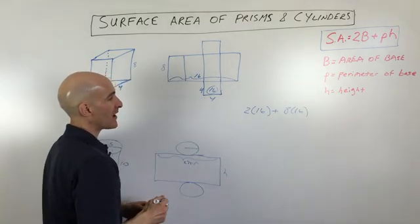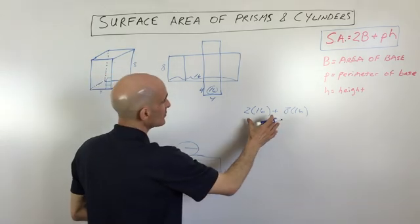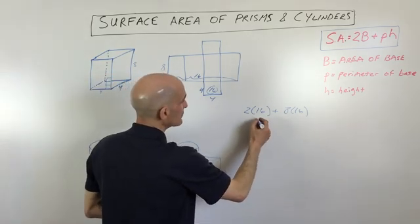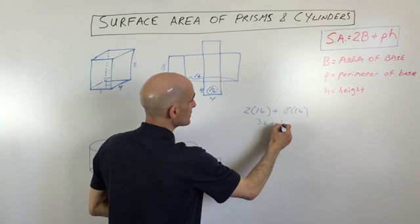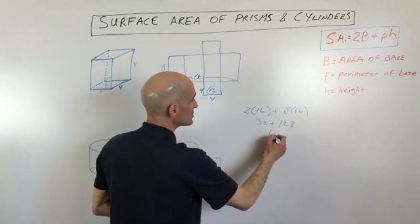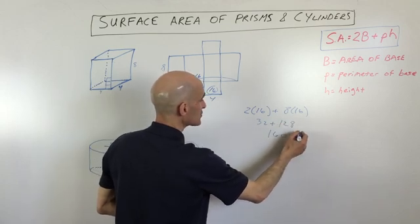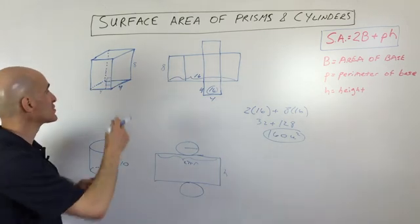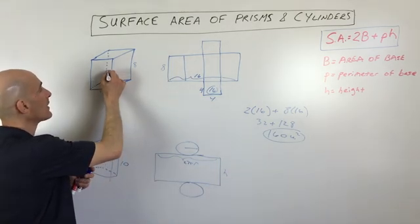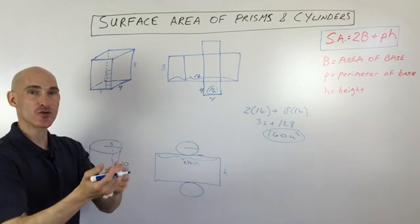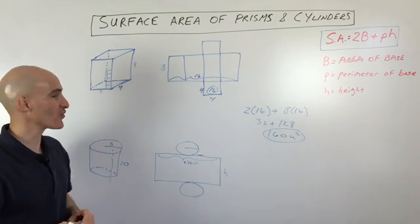So if you simplify that all out what do we get? Looks like we get 32 plus 128 which is 160 units squared. For area it's square units because you're covering this with like little one by one by one squares, like you're wrapping a present with little squares.